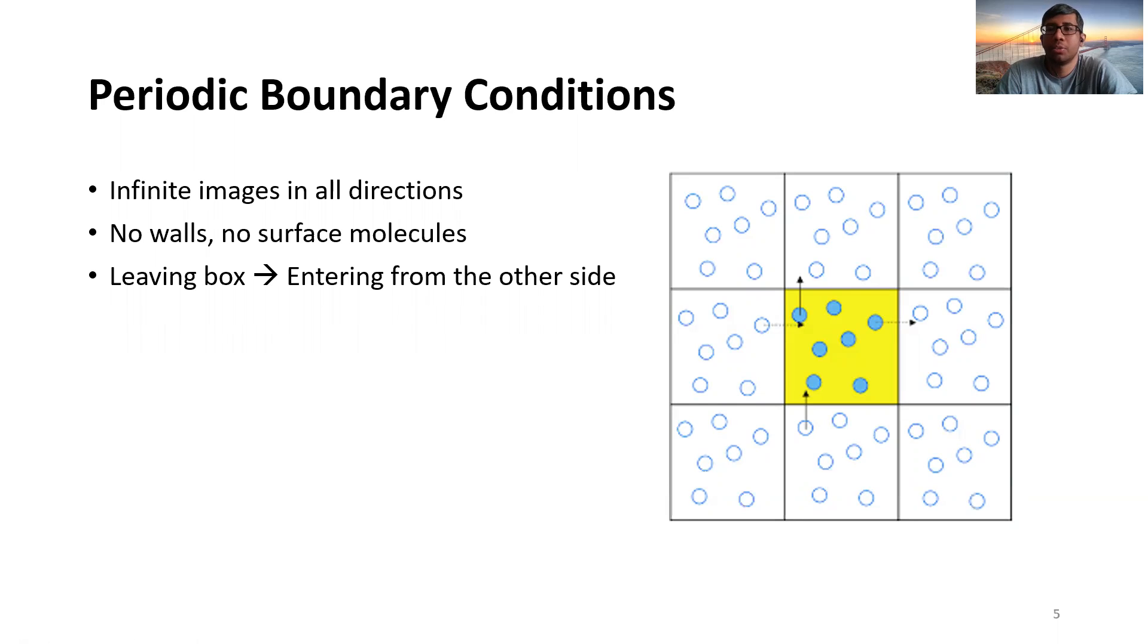Think about a 3D cube in which at the center there is a central box in which the actual simulation is happening and all the other boxes are copying what is happening at the central box, and there is no wall and no surface molecule. If it happens for an atom to leave the box from one side it will enter the other side and it will keep the system as it was. That's how periodic boundary conditions work and why it is needed.